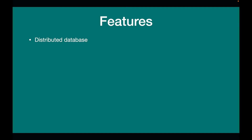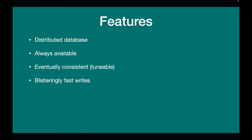Let's take a look at the features that Cassandra gives you. First, it's a distributed database, so your data is replicated across different machines. Cassandra is always available by default, so whenever you're querying Cassandra it should always work, even if one or two machines go down. By default Cassandra is eventually consistent, but the parameter is tunable, so if you want strong consistency you can tune your cluster accordingly. Writes in Cassandra are very, very fast, so if you have a write-intensive application, Cassandra tends to be one of the better choices.